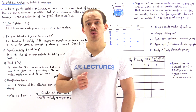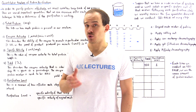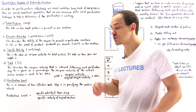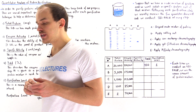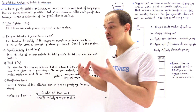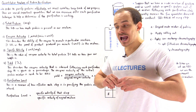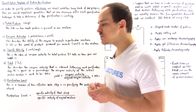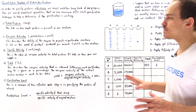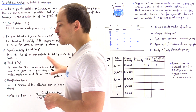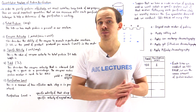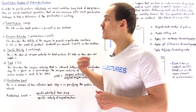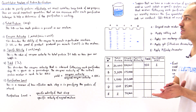Thus far in our discussion on purifying proteins, we discussed eight different types of techniques or methods that we can use to purify a mixture of proteins and isolate a protein that we actually want to study. The next question is, how do we actually know that the purification method we carry out is actually working? How do we know that we are purifying our protein mixture following some type of technique?